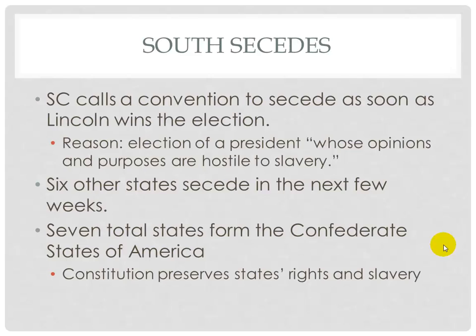The South Carolinians justified seceding by charging that a sectional party had elected a president whose 'opinions and purposes are hostile to slavery.' By February 1st, 1861, seven states had removed themselves from the Union: South Carolina, Alabama, Mississippi, Florida, Georgia, Louisiana, and Texas.